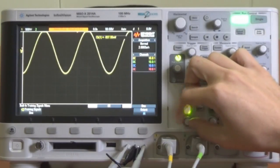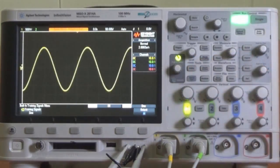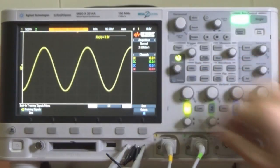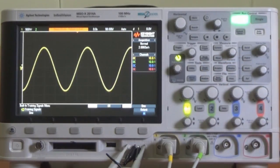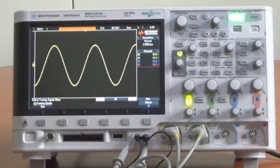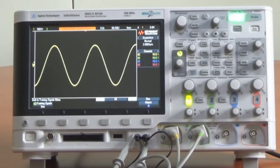Si presionamos la perilla de posición vertical del canal 1 ajustamos la forma de onda para que aparezca en el centro de la pantalla. Ahora vamos a realizar algunas mediciones en esta onda sinusoidal repetitiva utilizando las funciones de medición del osciloscopio. Utilizaremos la función cursores para realizar las mediciones de voltaje y tiempo.